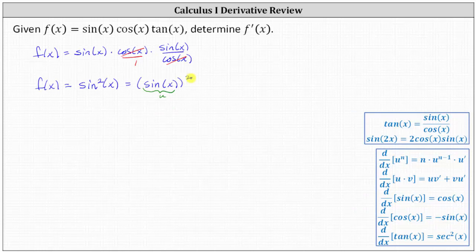When applying the chain rule, we'll let the inner function be u. As soon as we identify u, we know we also need to find u'. u' is the derivative of sin(x). u' = cos(x).